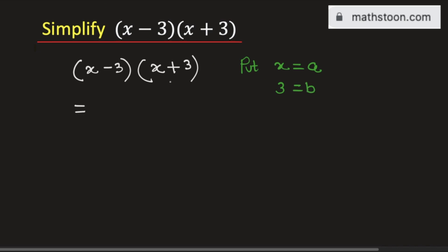Then the given expression can be written as a minus b times a plus b. We know that the formula of a minus b times a plus b is a square minus b square.